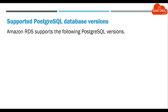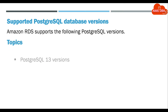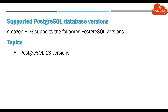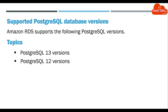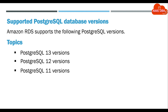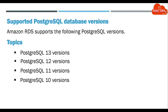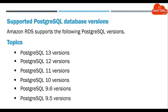Amazon RDS supports the following PostgreSQL versions: PostgreSQL 13, PostgreSQL 12, PostgreSQL 11, PostgreSQL 10, PostgreSQL 9.6, and PostgreSQL 9.5.